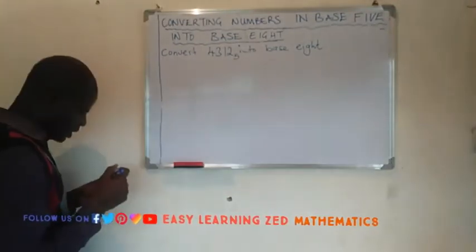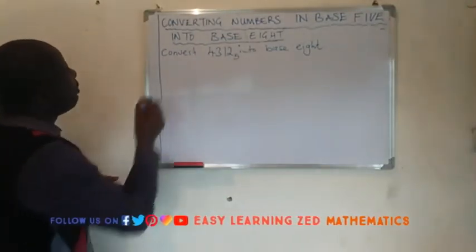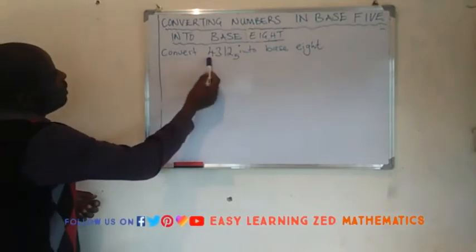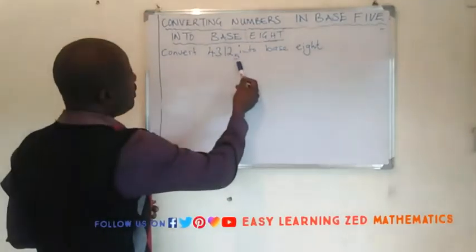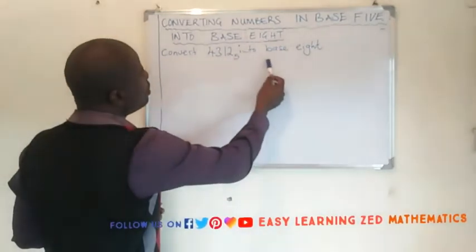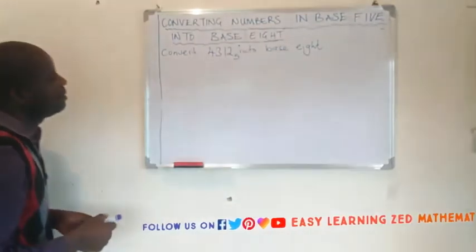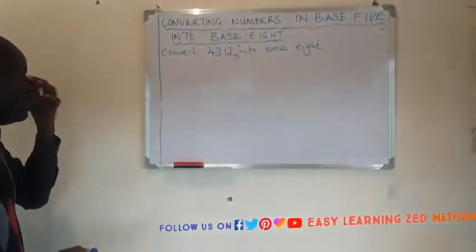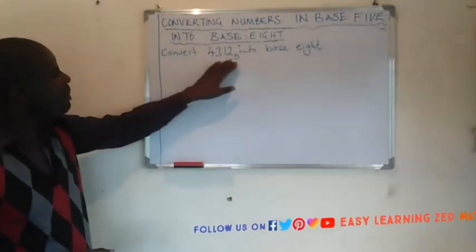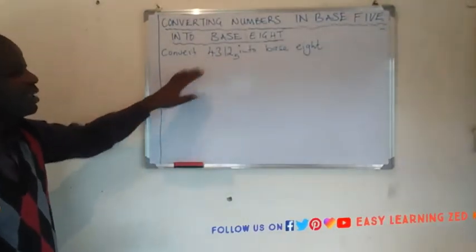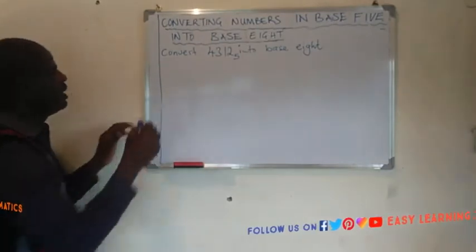On the board you have this question: convert 4312 base 5 into base 8. So what we're going to do first is convert this number into base 10.